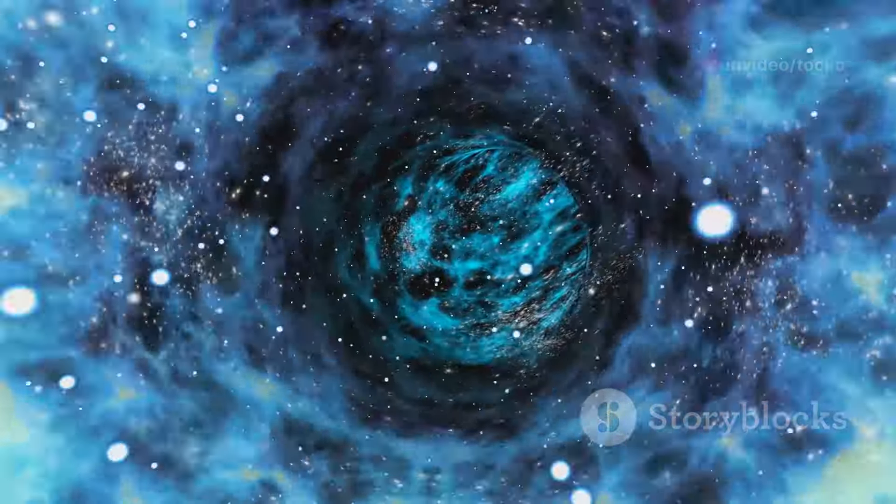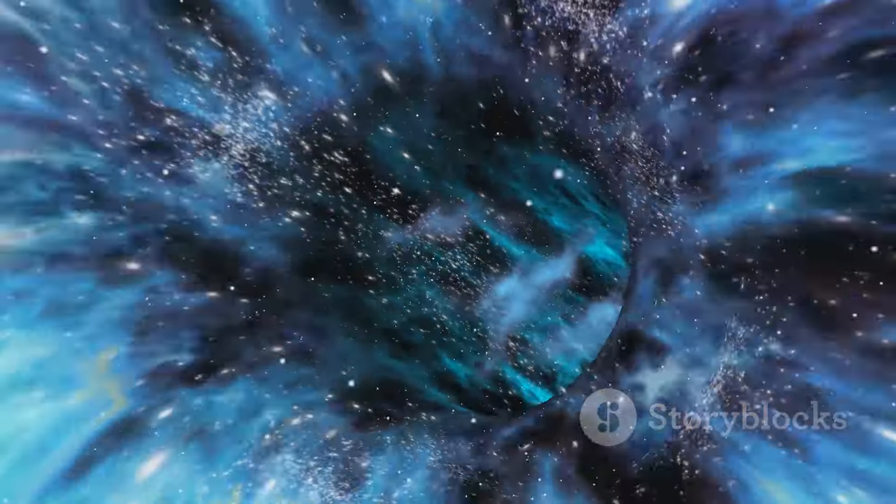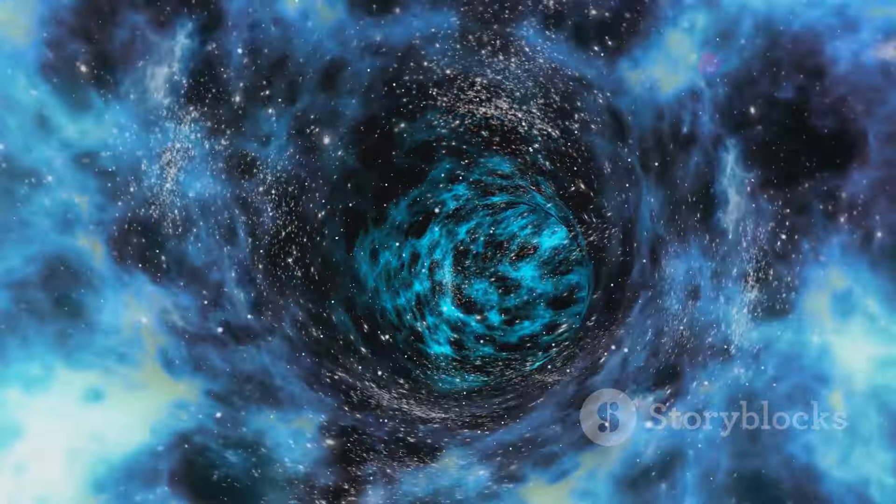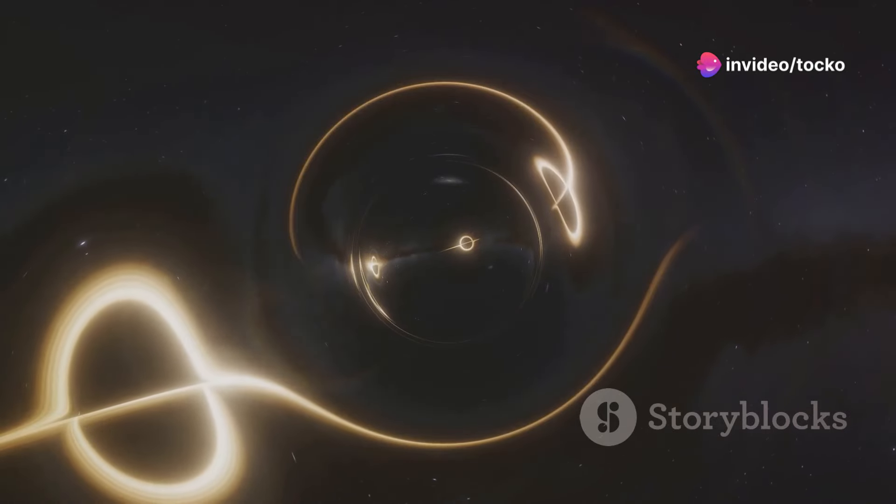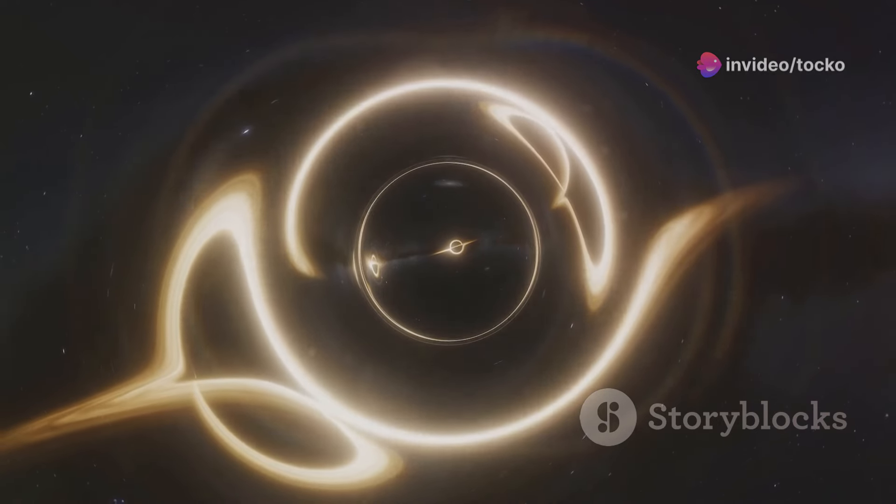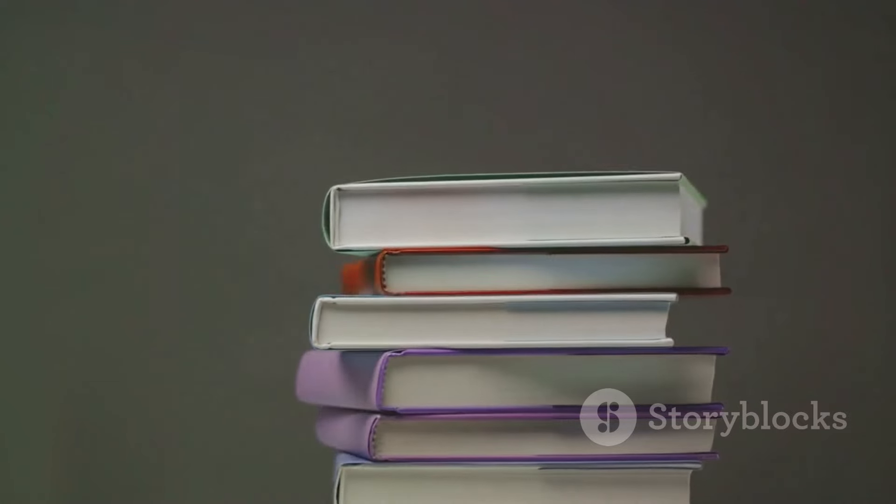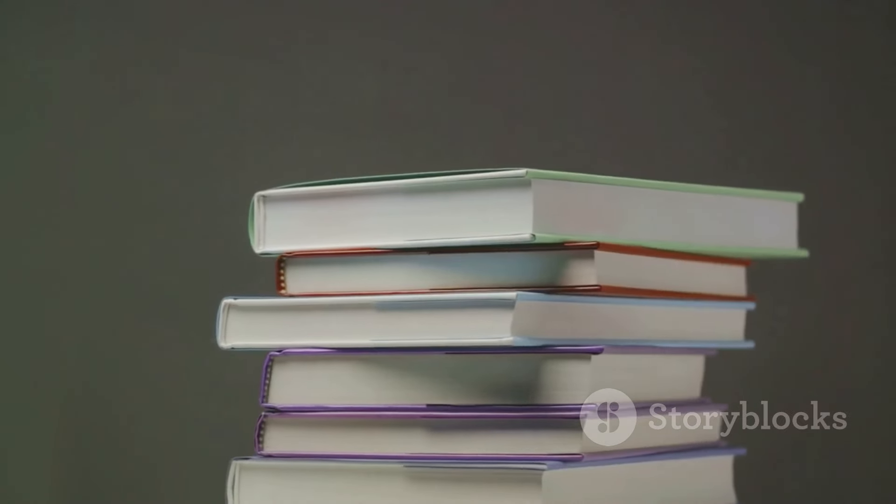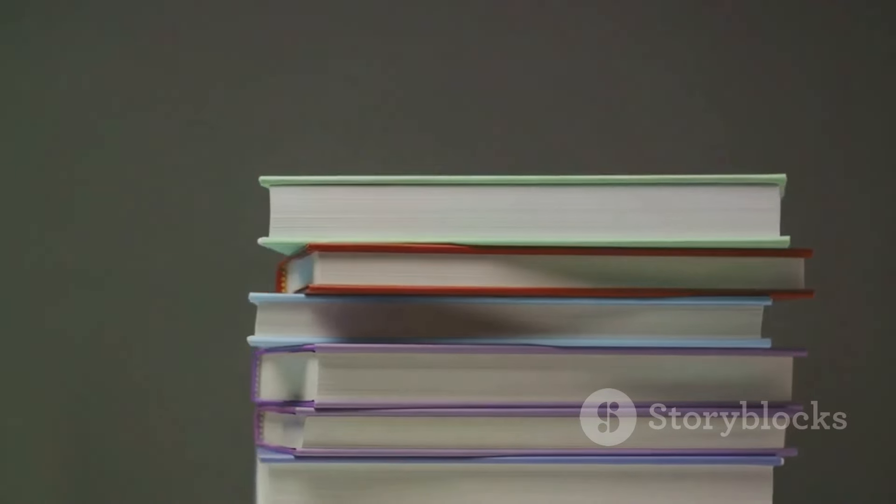theory also suggests that there are more dimensions to space than the three we experience—length, width, and height. These extra dimensions are curled up and hidden from our view, but they could be the key to understanding the multiverse. In some versions of string theory, these extra dimensions provide the space for other universes to exist, like sheets of paper stacked on top of each other.